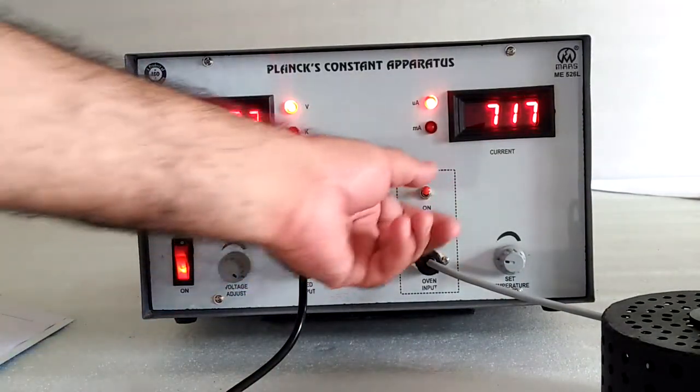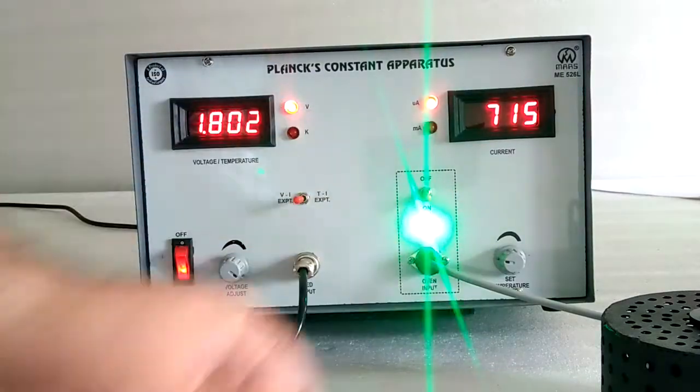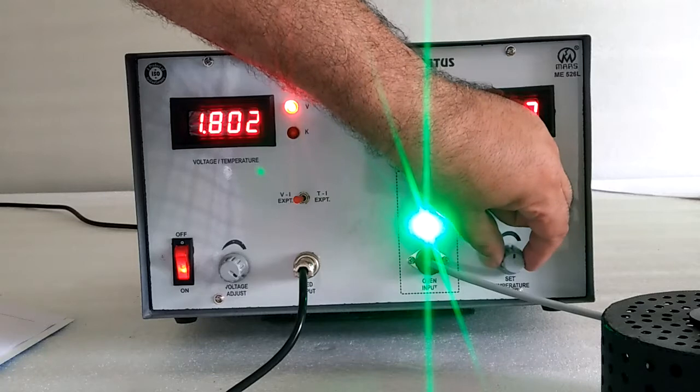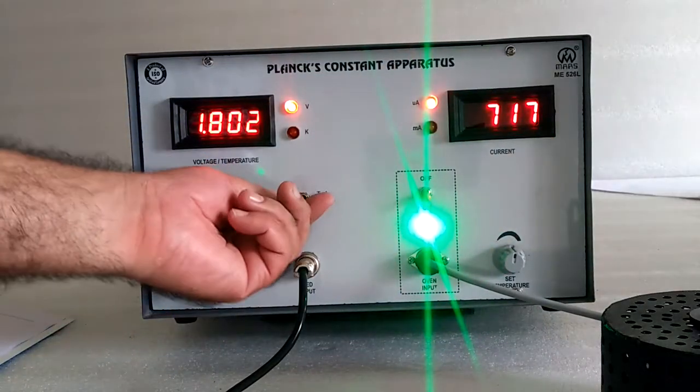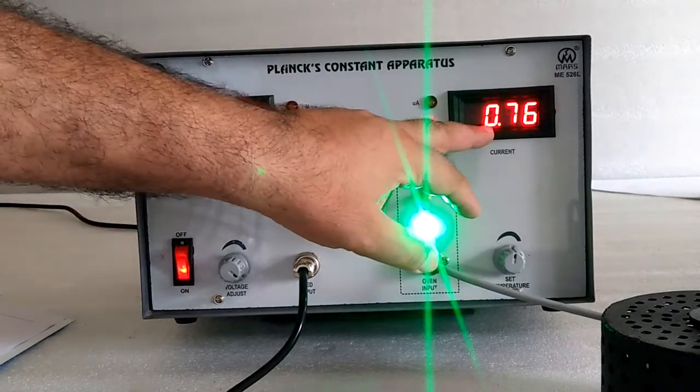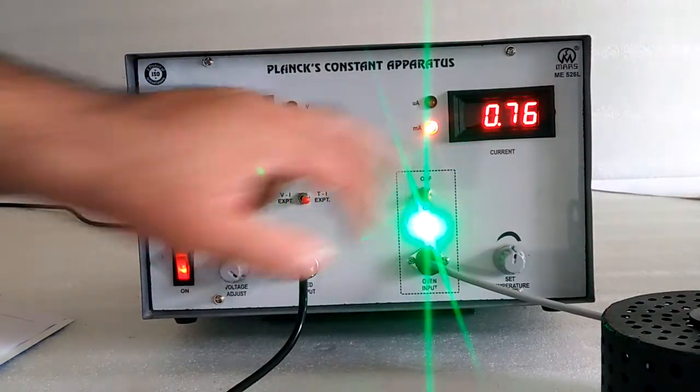Note down the voltage. Switch on the voltage. Switch on the oven. Increase the temperature at mid position. Change the toggle switch to temperature display. And here is the current display in milliampere.